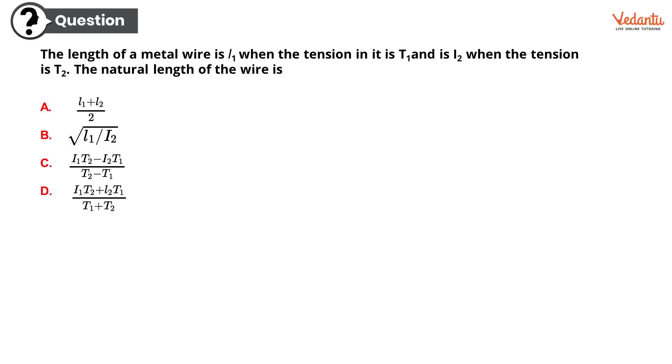The length of a metal wire is L1 when the tension in it is T1 and is L2 when the tension is T2. The natural length of the wire is: option A L1 plus L2 upon 2, option B root of L1 upon L2, option C L1T2 minus L2T1 upon T2 minus T1, or option D L1T2 plus L2T1 upon T1 plus T2. Interesting, isn't it? Come on, you can do this. Give your best shot. The correct option is option C, L1T2 minus L2T1 upon T2 minus T1. Congratulations! Very well done. Giving a huge round of applause for every one of you. You did a great job.